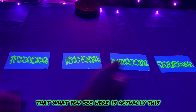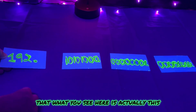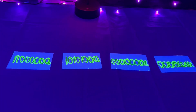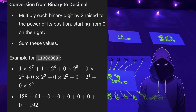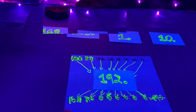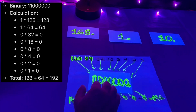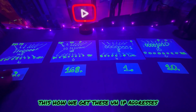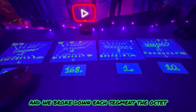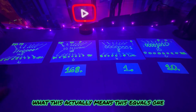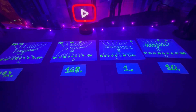Just keep in mind that what you see here is actually this. Now we're going to get into what all these ones and zeros actually mean. This is how I have the numbers here — multiply each binary digit by two raised to the power of its position, starting from zero. So if we remember, 192 actually means 11000000. This is how we get these IP addresses, and we broke down each segment — the octet — and this equals 11000000, and so on.